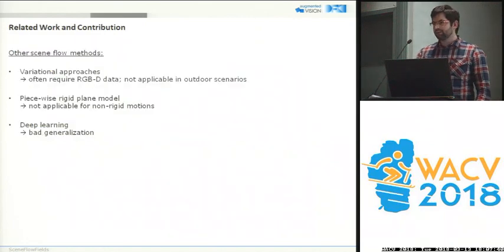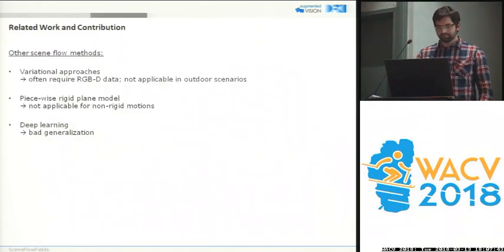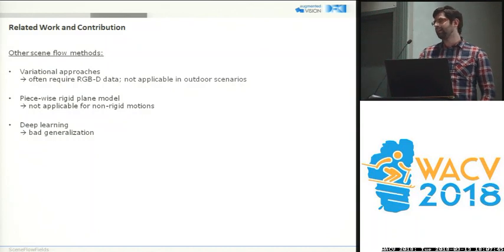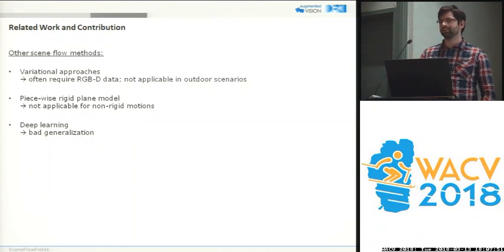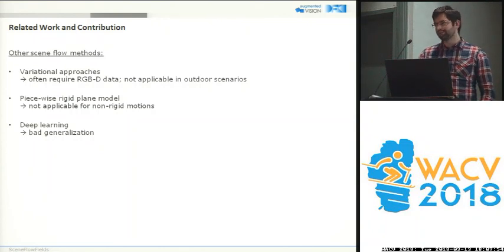There exist methods that do scene flow estimation, but they are either very slow, only work in a controlled indoor environment, or have strong assumptions like planar surfaces and rigid motions — and of course there's deep learning.